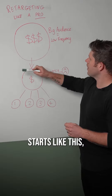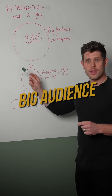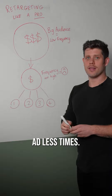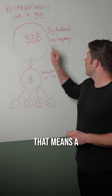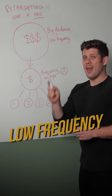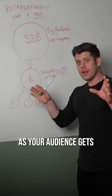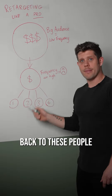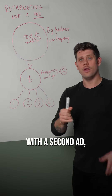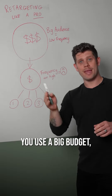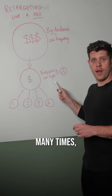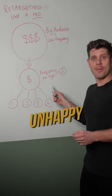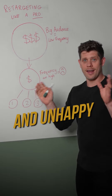Top of your funnel starts like this: a big audience with a bigger budget. That means more people will see your ad less times — that means a low frequency. This is very important. As your audience gets smaller and you retarget back to these people with a second ad, if you use a big budget they'll see the ad too many times, the frequency goes up, and that leads to unhappy customers and an unhappy audience.